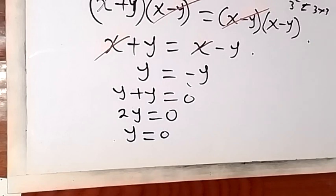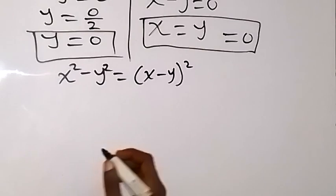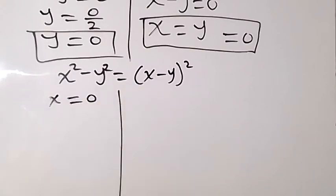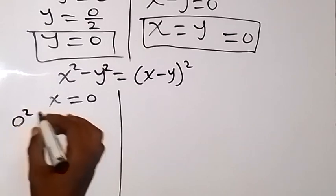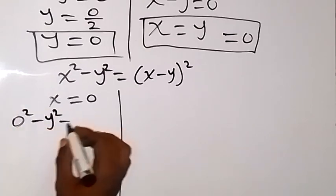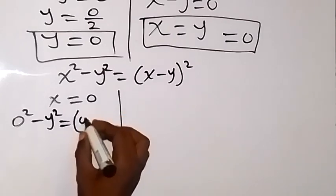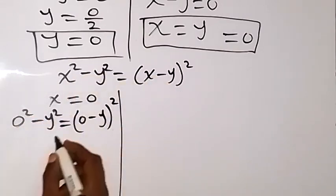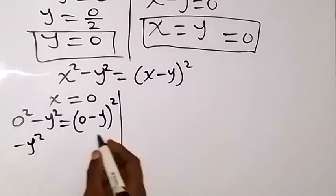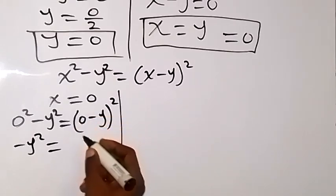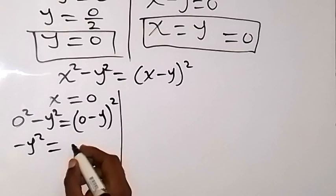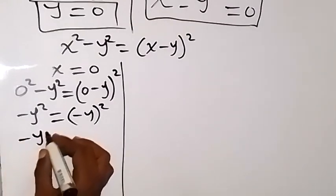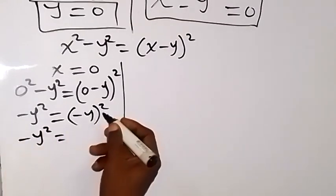Now let's check if the solution is satisfied. Let's put x = 0 to test whether it works. When we substitute x = 0 into the equation, it becomes 0 squared minus y squared equals (0 minus y) squared, which gives minus y squared equals minus y squared — that is, minus y squared equals plus y squared.